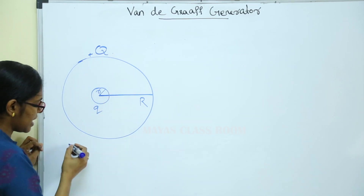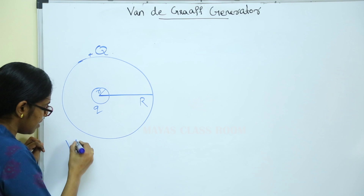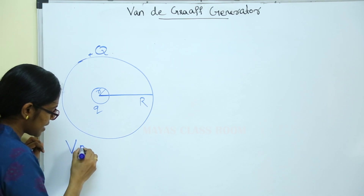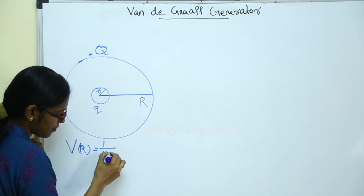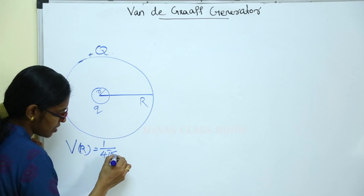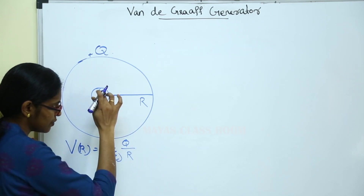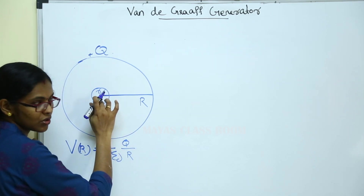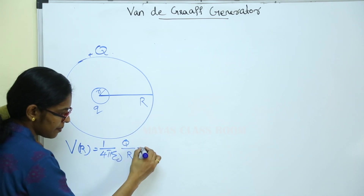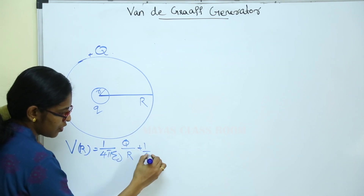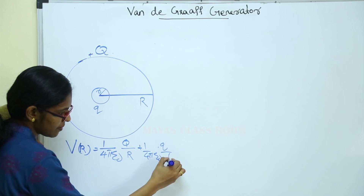The potential of the large sphere: V of R is equal to 1 by 4 pi epsilon naught, capital Q divided by R.